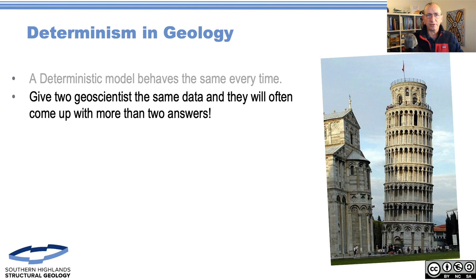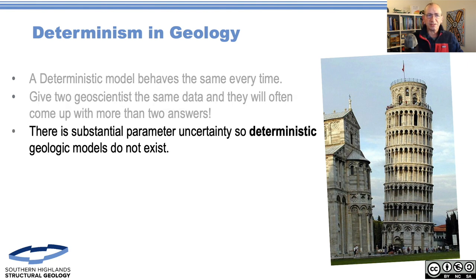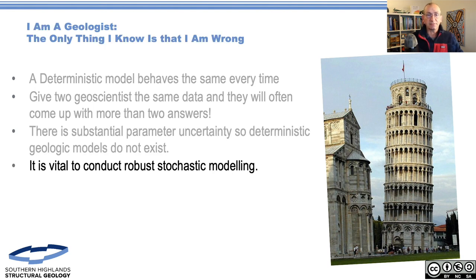When we think about geology, it's generally pretty under-constrained. We don't know a lot about what's happened, so if you give two geologists information you'll generally get three answers or more. What we'd argue is that the important thing is to recognize that determinism doesn't work in geologic models. If that's the case, we have to use stochastic modeling. Over the next lectures you'll see our efforts to introduce stochastic modeling into fault seal calculations.